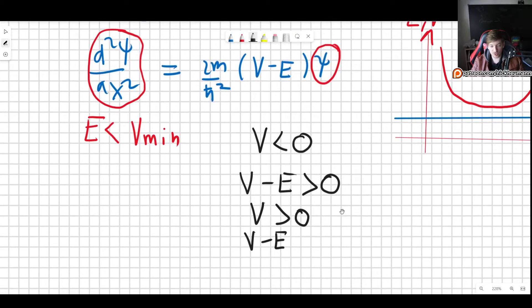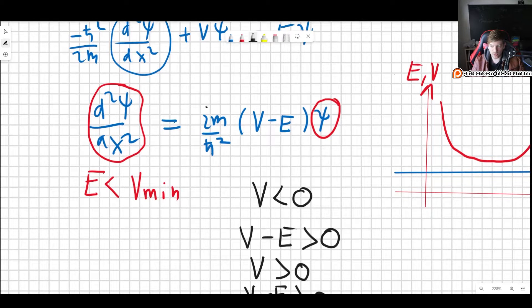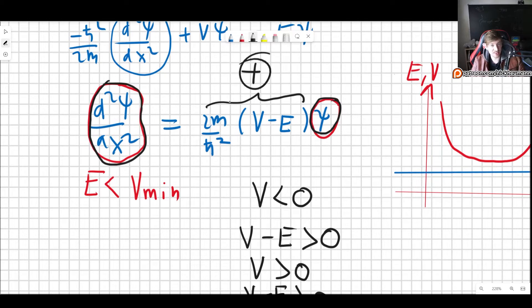But if the potential is positive, then V minus E, with E being smaller than the smallest possible value of the potential, will always be positive. So regardless of what happens, this prefactor to the wave function is always positive.